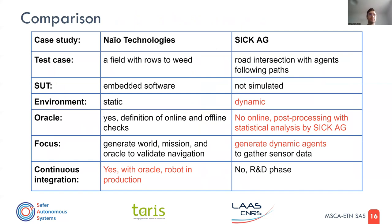A small comparison to show some interesting differences. Regarding the test case: for NIO, it was a field with rows the robot had to navigate. For SICK, it was a road intersection with agents following predefined paths. For the system under test, we had access to it for NIO but not for SICK. A big difference was in the environment — for NIO, it's static, so the robot is the only agent moving.